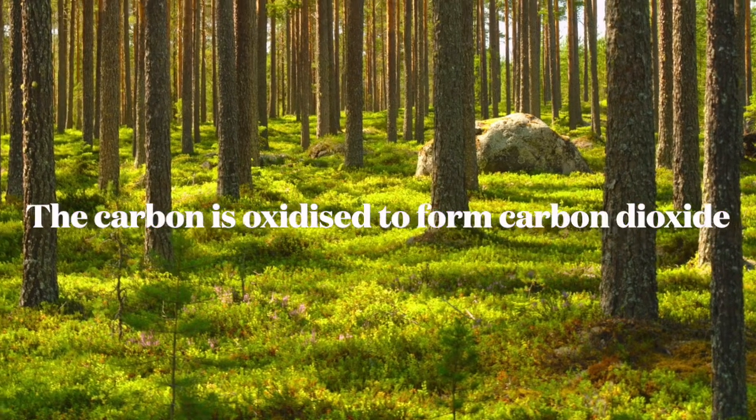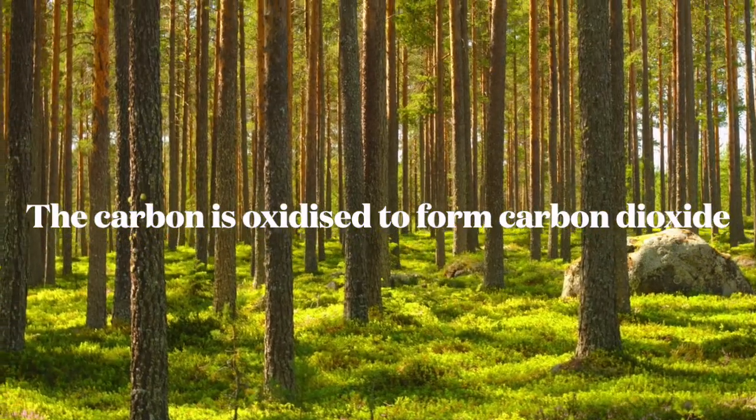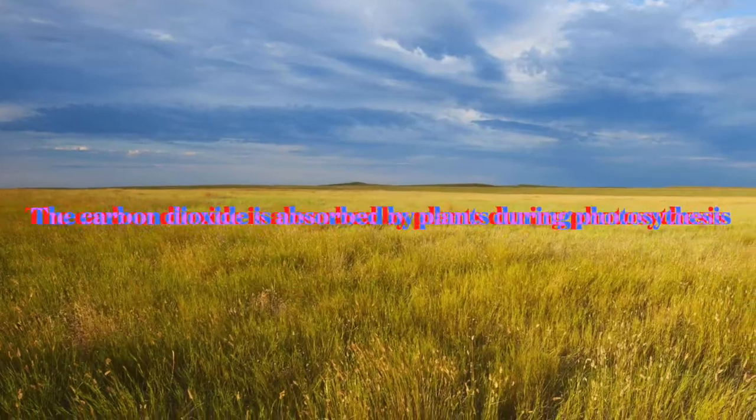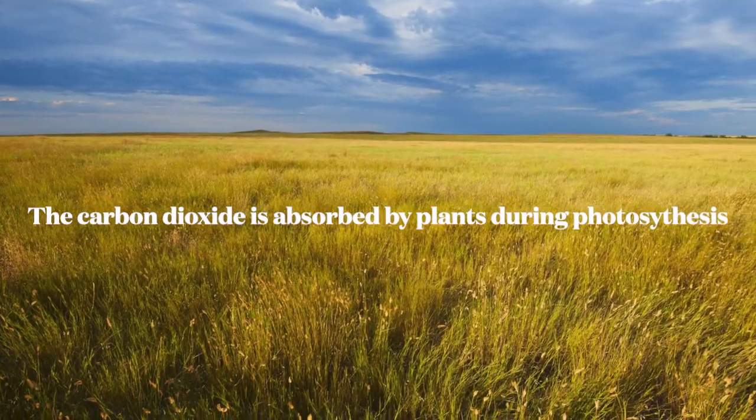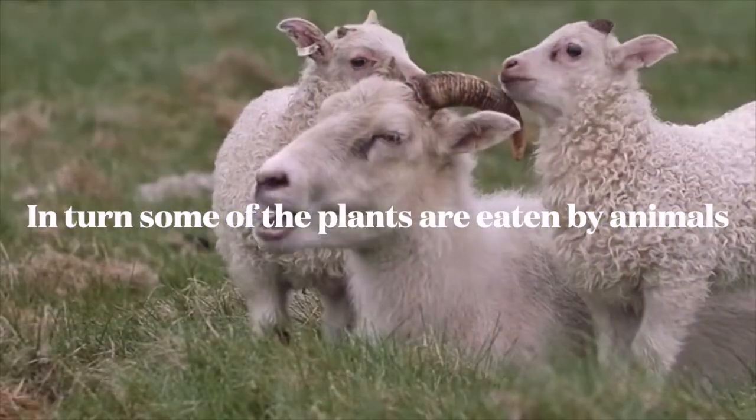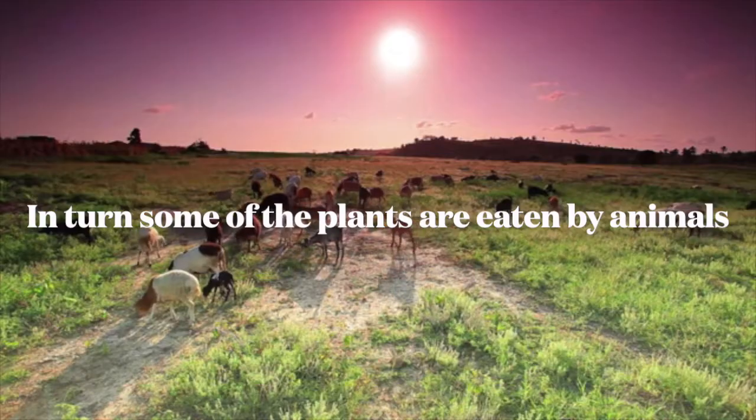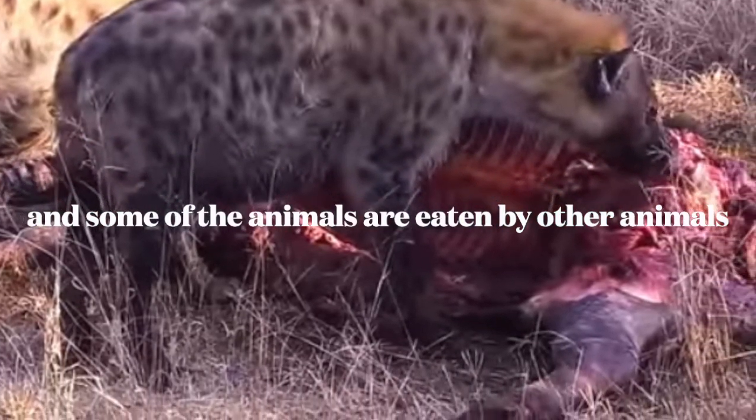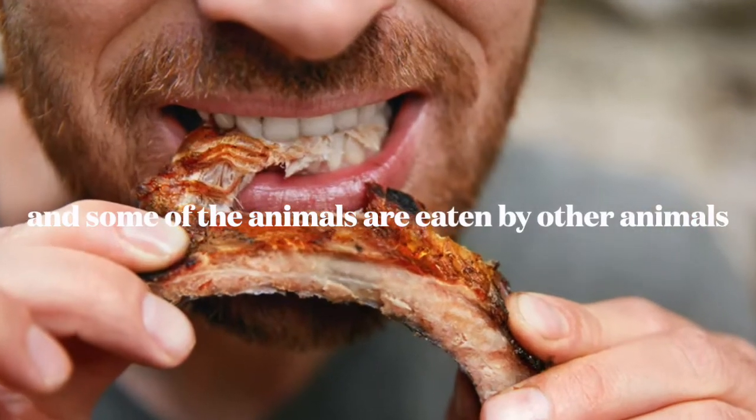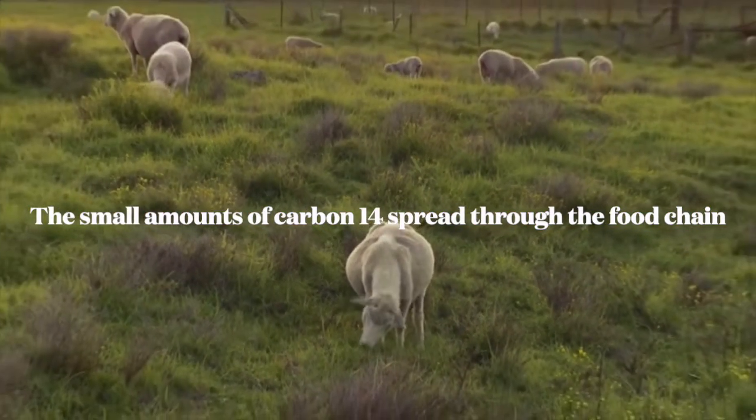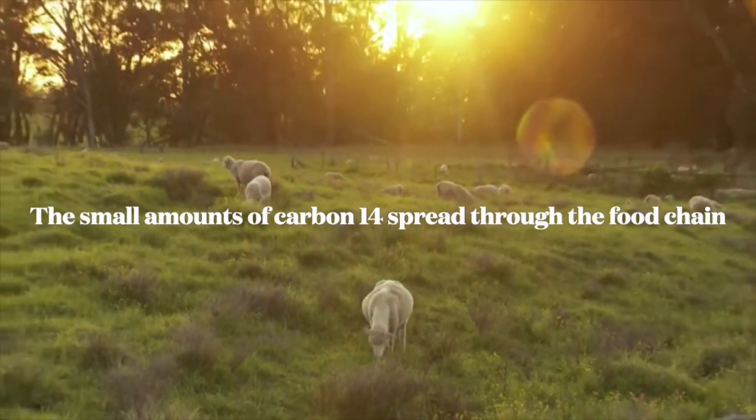This carbon-14 circulates around the atmosphere and is likely to be oxidised to form carbon dioxide. The carbon dioxide is absorbed by plants during photosynthesis, and then in turn some of the plants are eaten by animals. And as is nature's way, some of those animals are eaten by other animals, including us. So small amounts of carbon-14 are spread through the food chain.